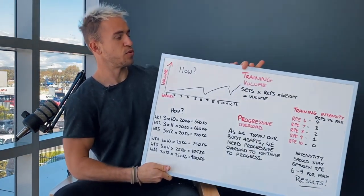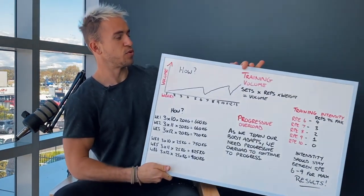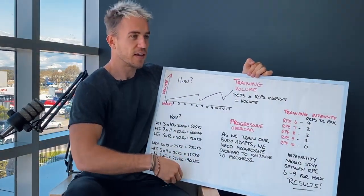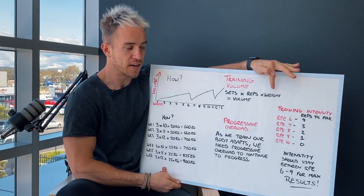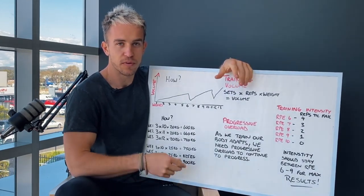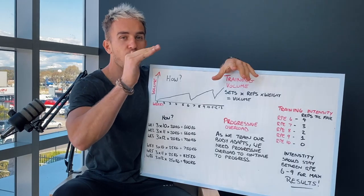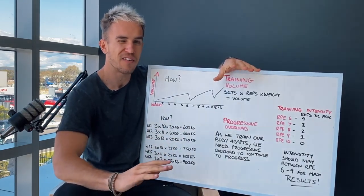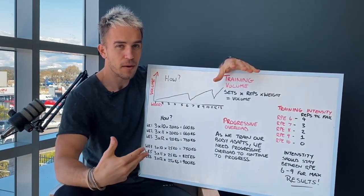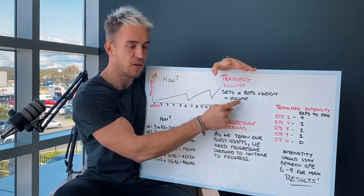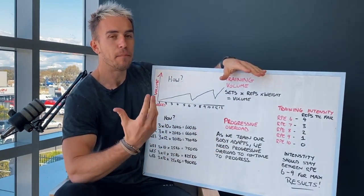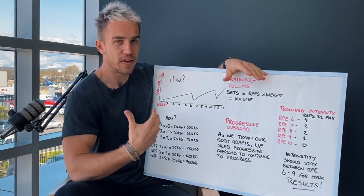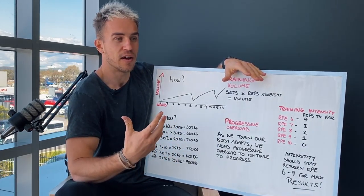The first part is training volume. Now training volume is sets times the reps times the weight. That equals training volume. This is something that needs to keep increasing over time. So it doesn't have to happen every single week, but over time we need to keep increasing that volume because our body will get used to what we're doing and it can happen quite quickly.